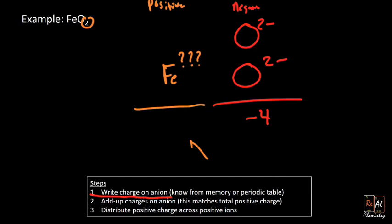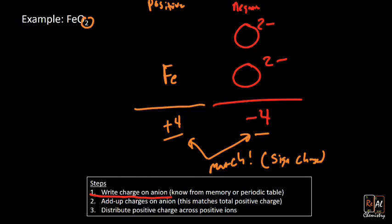Now, I know these two down here have to match. So where I have negative four here, I have plus four here. So they match with the sign change. And now I distribute that plus four across how many irons I have. So if I had more than one iron, it would get distributed across the more than one iron. In this case, I just have one. So that means my one iron must give a plus four. So that must be the charge on my iron.